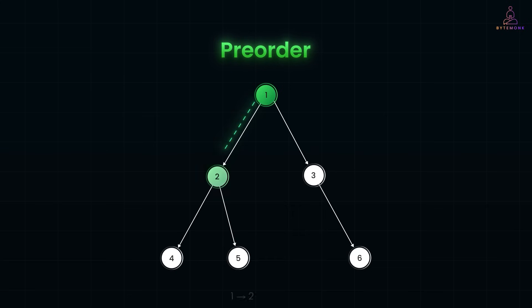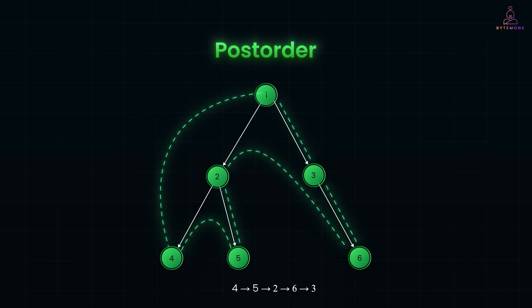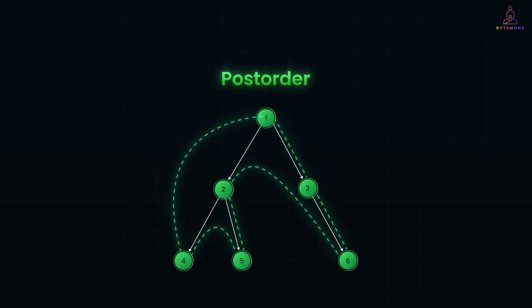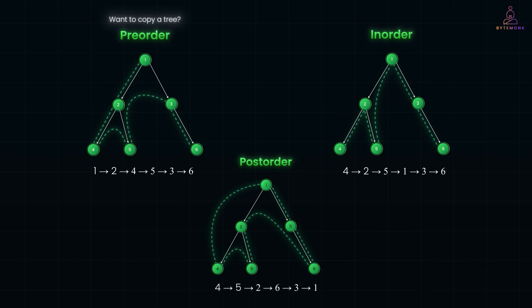Pre-order: you visit the node first, then left, then right. In-order: it's left first, then node, then right. Post-order: left, right, then node at the end. Each of these is just a different way of sequencing the visit. Want to copy a tree? Use pre-order. Want to delete nodes safely? Post-order. And if you want values in sorted order, go for in-order.